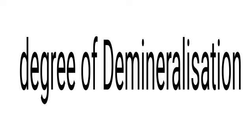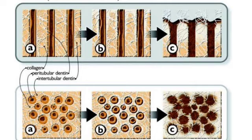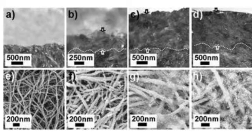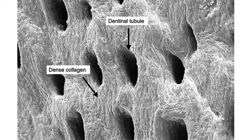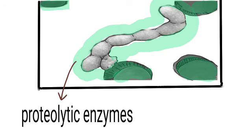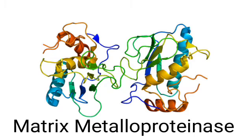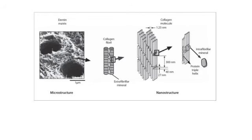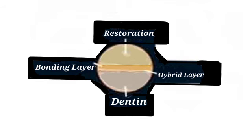Although demineralized compared to normal dentine, caries-affected dentine has the capacity to remineralize under suitable conditions. The collagen matrix in caries-affected dentine shows much less evidence of the action of bacterial proteolytic enzymes and host matrix metalloproteinases, meaning the collagen matrix is largely intact and retains its tubular structure, making it suitable for bonding with adhesive restorations.